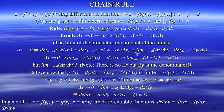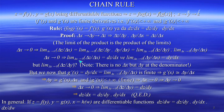By definition, limit of delta Z over delta X when delta X goes to zero is dz/dx, and limit of delta Y over delta X when delta X goes to zero is dy/dx. But we have a problem: the limit of delta Z over delta Y when delta X goes to zero. If it were delta Y going to zero, it would simply be the derivative of Z with respect to Y. But the condition says delta X goes to zero.